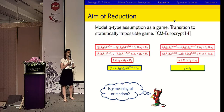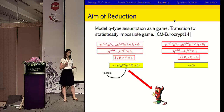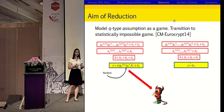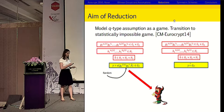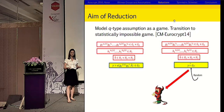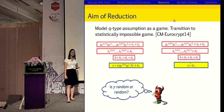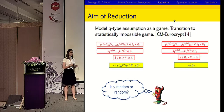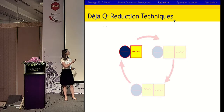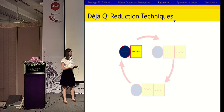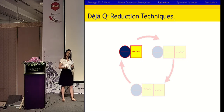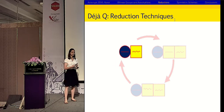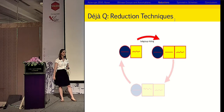We start with a Q-type assumption game where the adversary is given a lot of inputs, then given either a target group element which is a meaningful function of these inputs, or one chosen completely at random. It wins if it has better than negligible advantage at deciding whether it is meaningful or random. The game we transition to has the adversary given a component distributed uniformly at random. In the other case it is given an element which is actually random, so the adversary has to decide whether the component is random or random — which it cannot do.